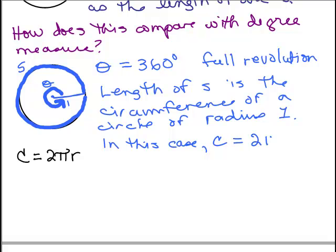So what's 2πr in this case? The circumference is 2π times 1, so the circumference is 2π. So this length of S is 2π. So S equals 2π.